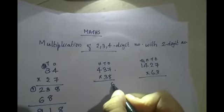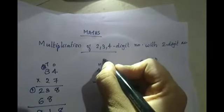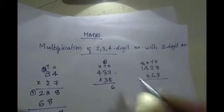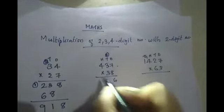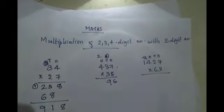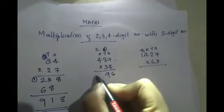7 into 8 is 56, 6 here and 5 carry over. 8 into 3 is 24, 24 plus 5 is 29. You will write the 9 here and 2 carry over. 8 into 4 is, what is 8 into 4, 32 plus 2, 34.